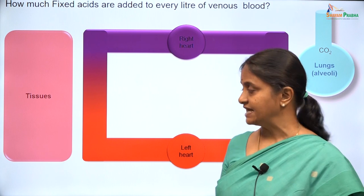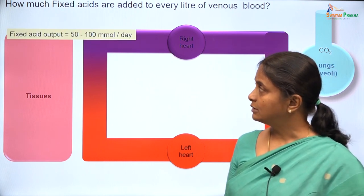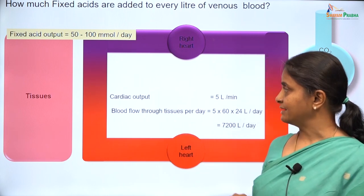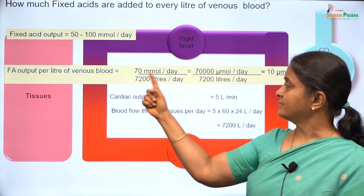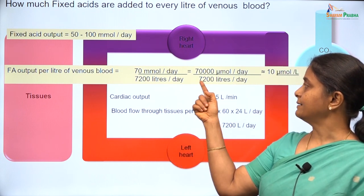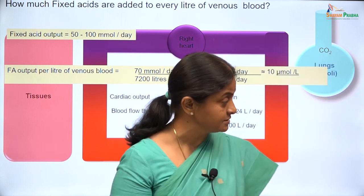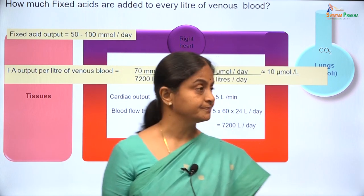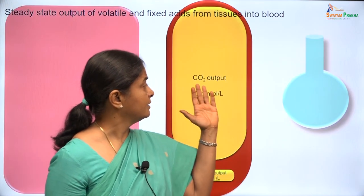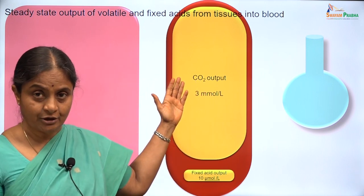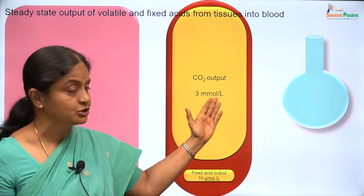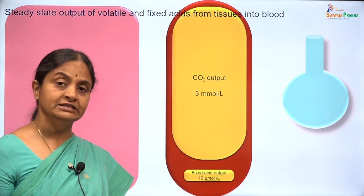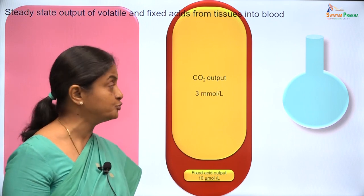For fixed acids: the fixed acid output was about 70 millimoles per day, which is 70,000 micromoles per day. Dividing by about 7,000 litres per day gives a fixed acid output of 10 micromoles per litre of blood coursing through tissues. So the steady-state carbon dioxide output from tissues into blood is 3 millimoles per litre, and the steady-state output of fixed acids is about 10 micromoles per litre of blood passing through tissues.